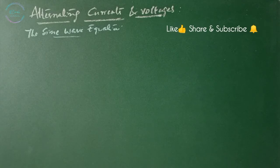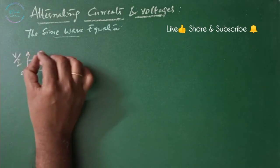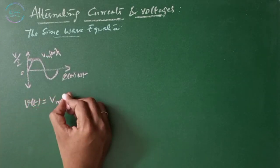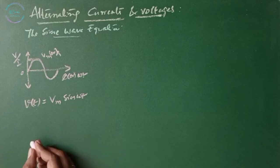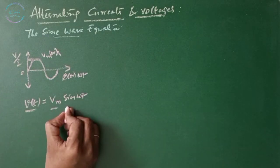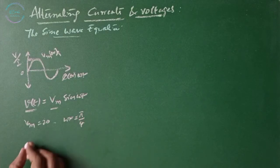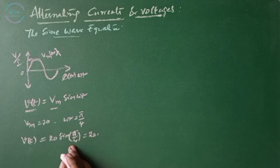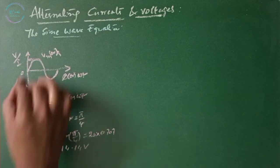The sine wave equation: the sine wave is graphically represented with a peak of Vm. The sine wave is represented as V(t) equals the maximum value Vm multiplied by sine omega t. This states that at any point of the sine wave, the instantaneous voltage is equal to the maximum value times the sine of the angular frequency at that point. For example, if Vm is 20 V and omega t equals pi by 4, then V(t) equals 20 sine(pi/4), which is 20 times sine 45°, which is 1 over root 2 or 0.707, giving 14.14 volts.